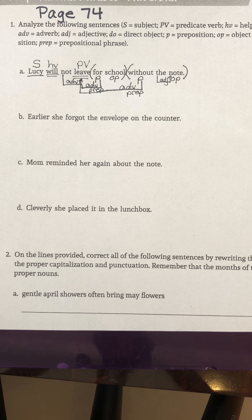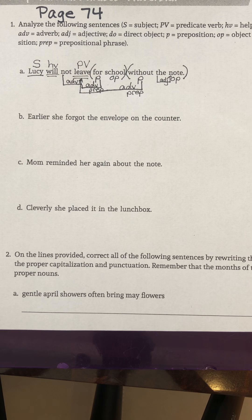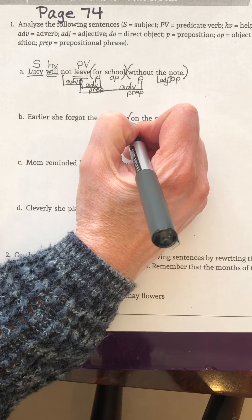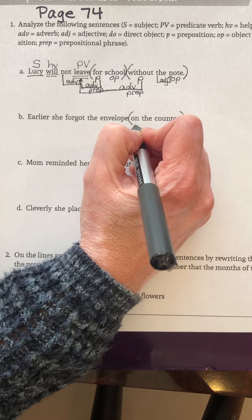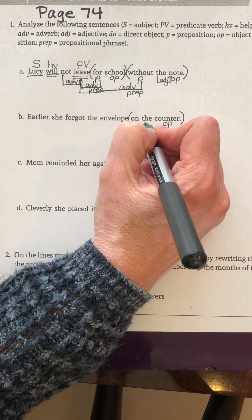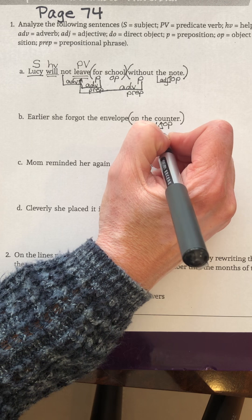Let's check letter B. Begin. Earlier, she forgot the envelope on the counter. Order of analysis is phrases, clauses, principal elements, and modifiers. Are there any prepositional phrases in this sentence? Yes ma'am. On the counter — prepositional phrase. On — preposition. On what? Counter — object of the preposition. The — adjective, modifying the noun.